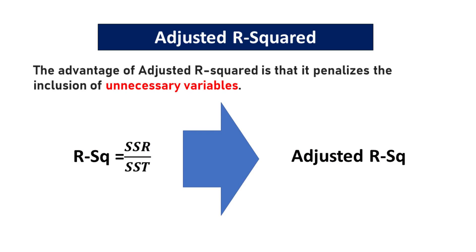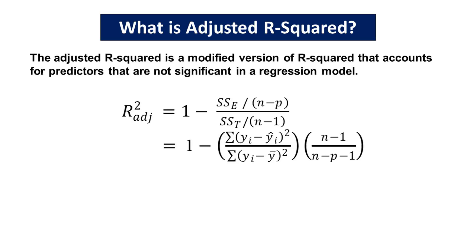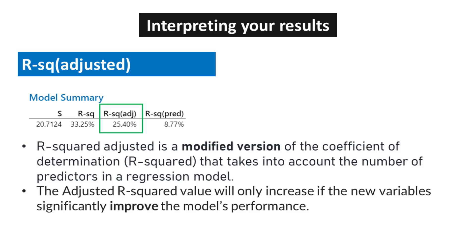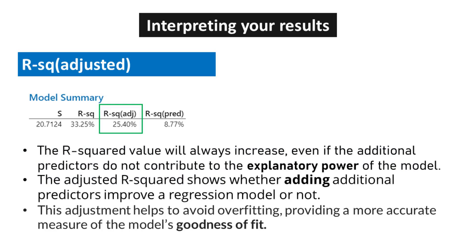The advantage of adjusted R-squared is that it penalizes the inclusion of unnecessary variables. Adjusted R-squared is a modified version of R-squared that accounts for the number of predictors in the model. The adjusted R-squared value will only increase if the new variables significantly improve the model's performance, whereas R-squared will always increase even if additional predictors do not contribute explanatory power. Adjusted R-squared helps avoid overfitting, providing a more accurate measure of the model's goodness of fit.